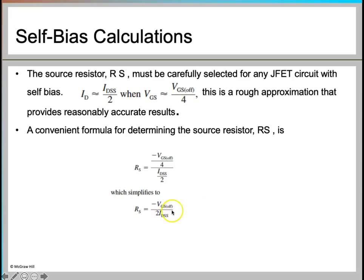In most numerical problems, VGS-off and IDSS are given, so you can directly calculate the value of RS. In case those values are not given in the problem, you use this approximation formula.